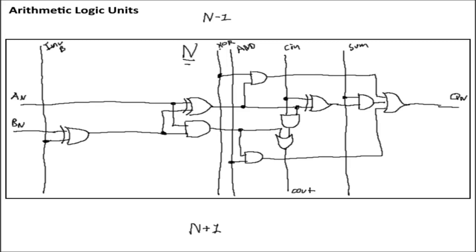If we want OR, we enable both XOR and AND, which combines them in the last OR gate to produce an OR output. If we want to do inversion, all we have to do is enable invert-B — so long as there's nothing on input-B — and then enable the XOR output, which will invert A. You could also invert B just by sending the input on the B input; the same control setup will work for both.